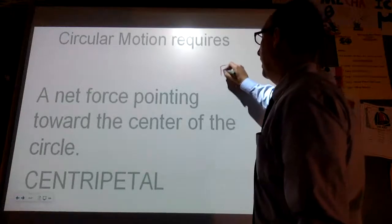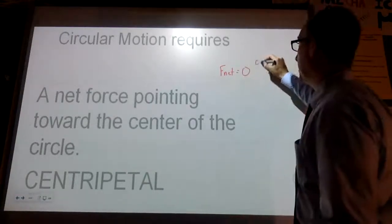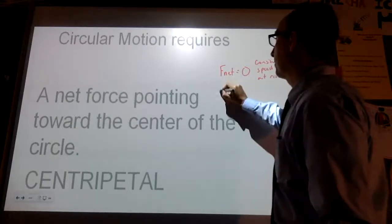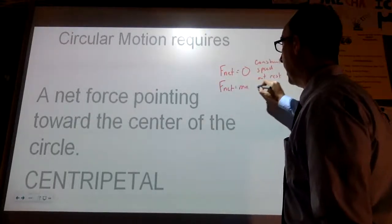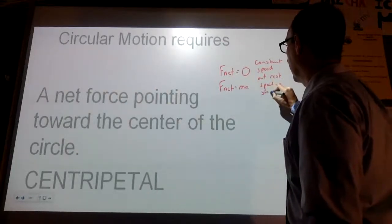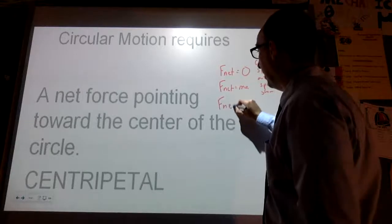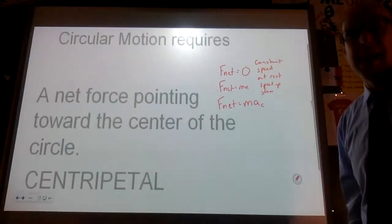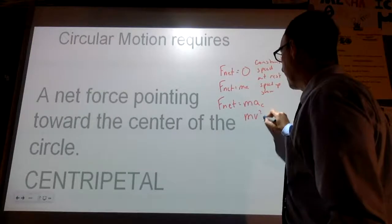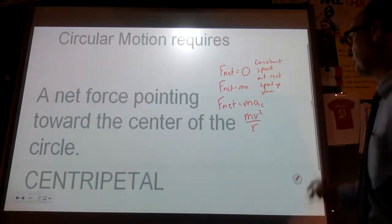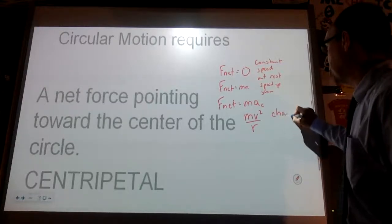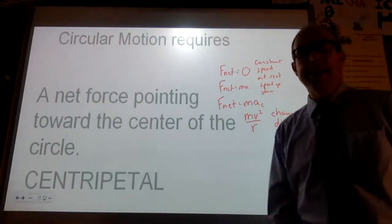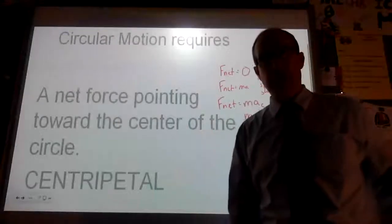So we had F net equals zero when we had constant speed or at rest. We had F net equals ma when we had things speed up or slow down. And now we're going to have a new F net, but instead of ma, it's m times ac. And if we remember what ac is, it's v squared over r. So now F net equals mv squared over r, and this is going to be when objects change direction. And since our acceleration is towards the center, our force has to be towards the center.